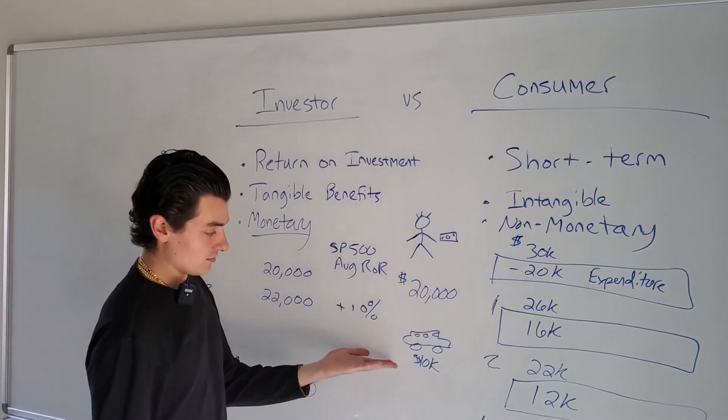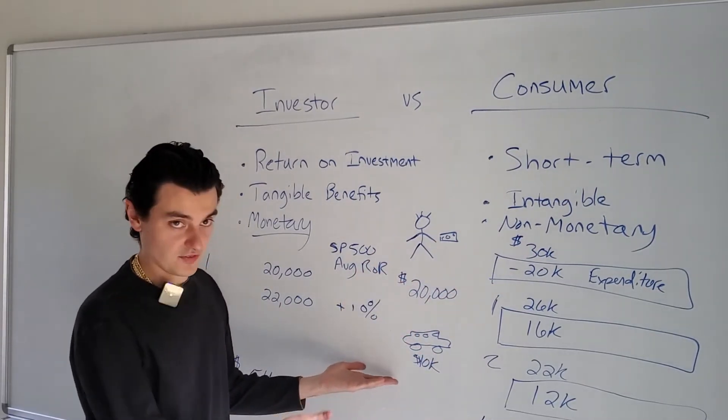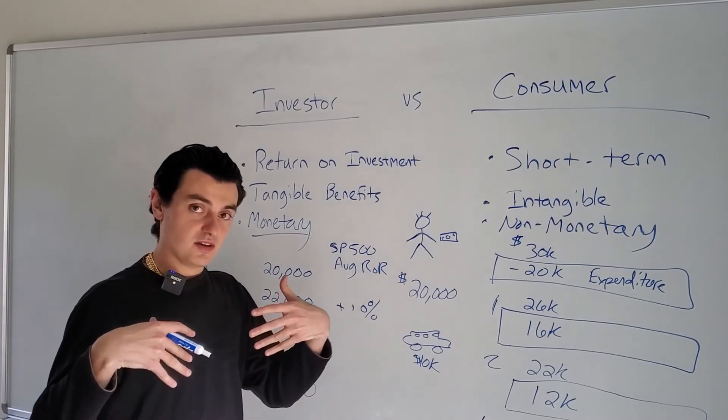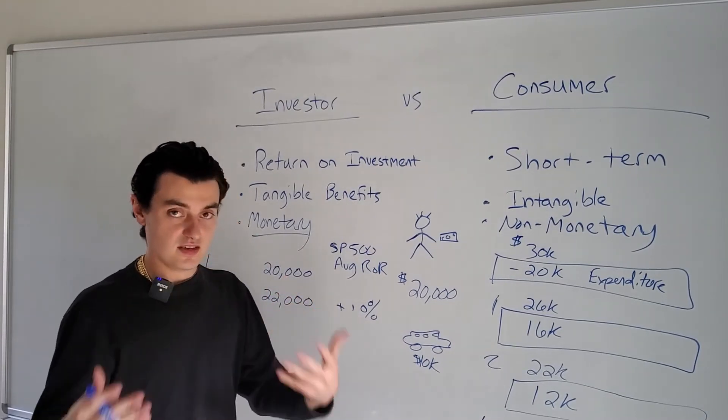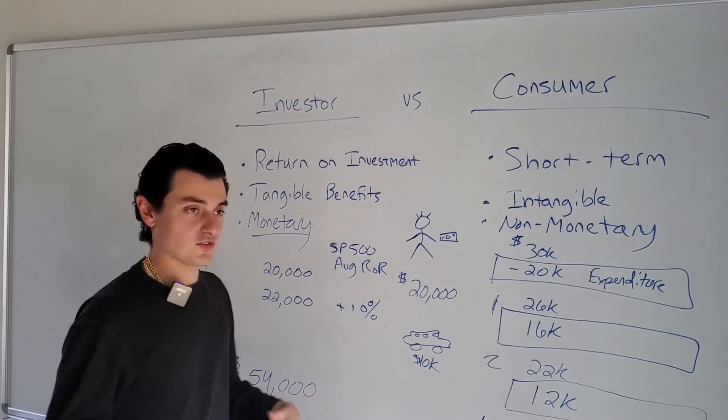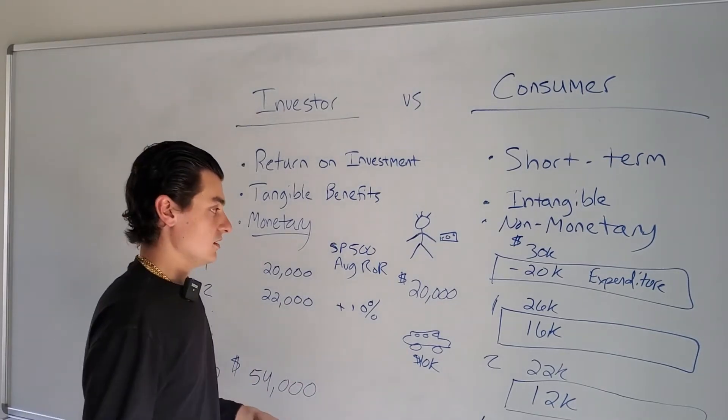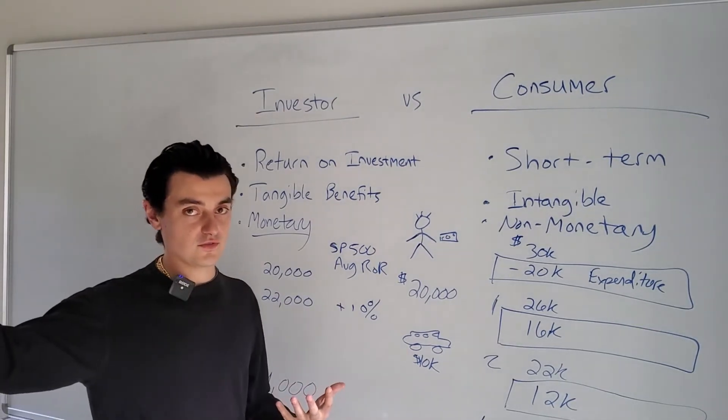Remember, in our example, he had a vehicle worth $10,000. Great vehicle. It worked just fine. But he was concerned about intangible benefits such as his image, such as how much fun he was having with his vehicle. He wasn't focused on the future.